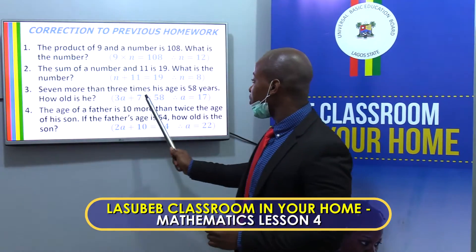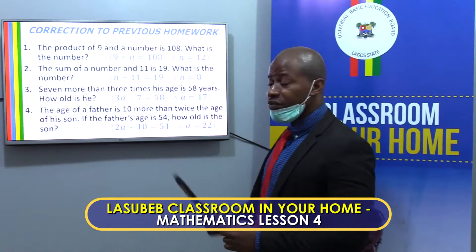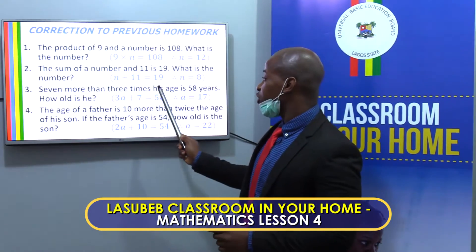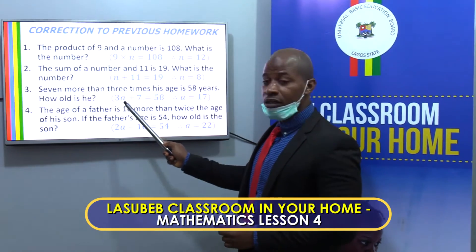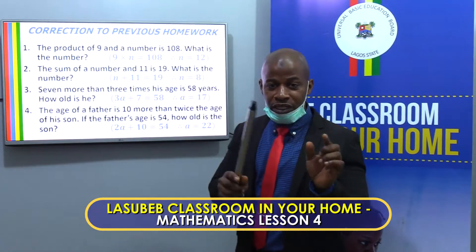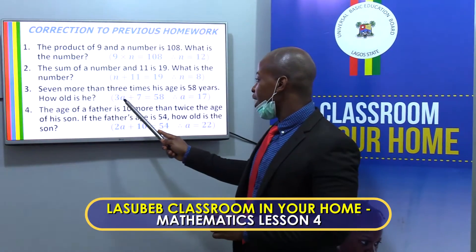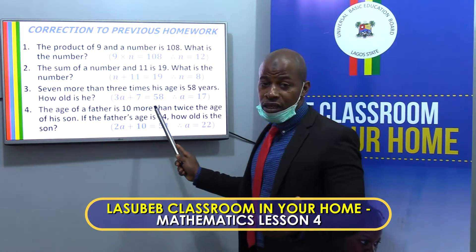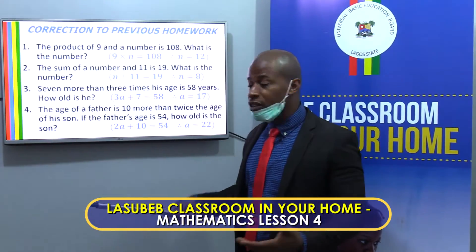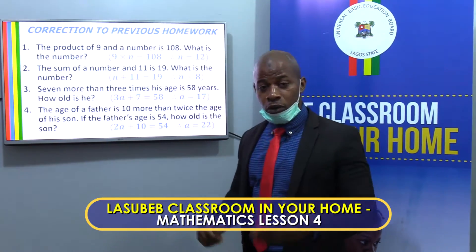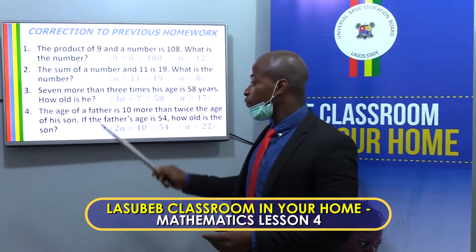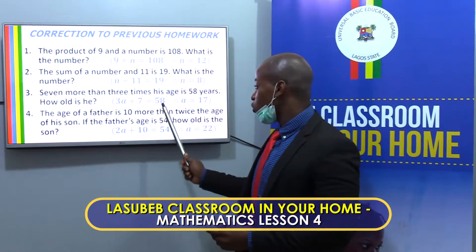Number three says 7 more than 3 times his age is 58 years. How old is he? 3 times his age to begin with is 3a. 7 more than that is to add 7 to 3 times his age. So you have 3a plus 7 equals 58. If we solve this using the way we have been taught, we will get 17. Just to be sure, 3 times 17 is 51, and 51 plus 7 gives us 58.